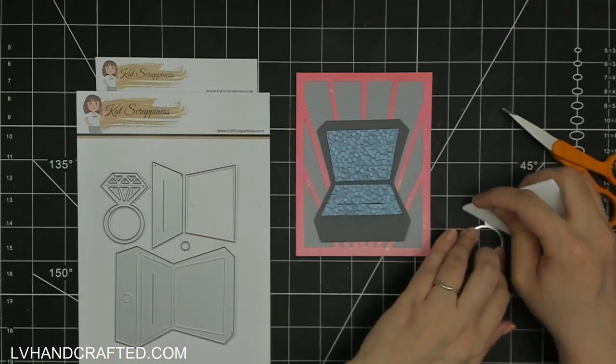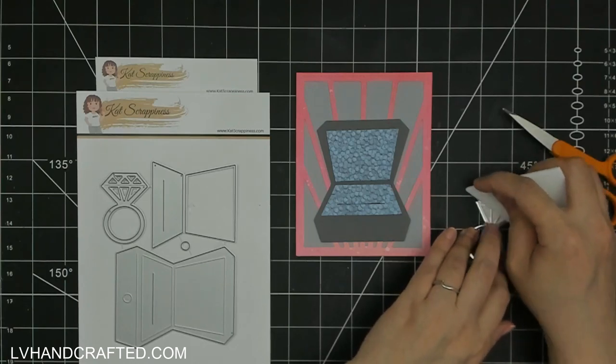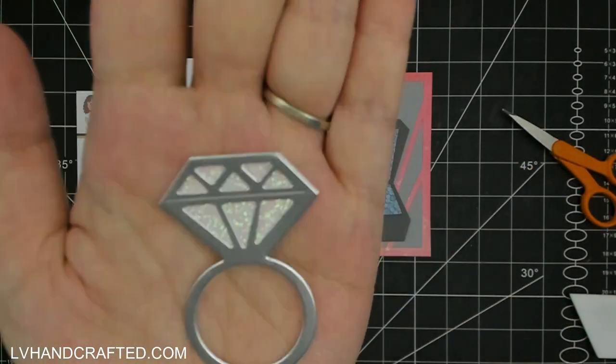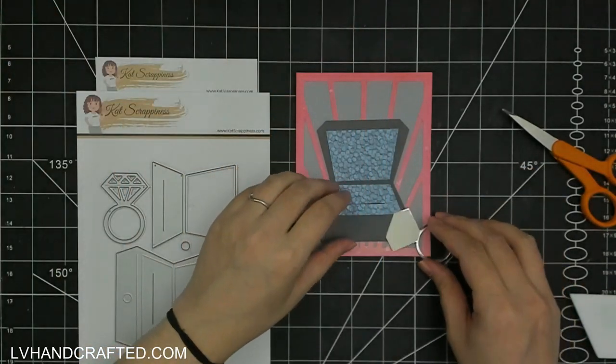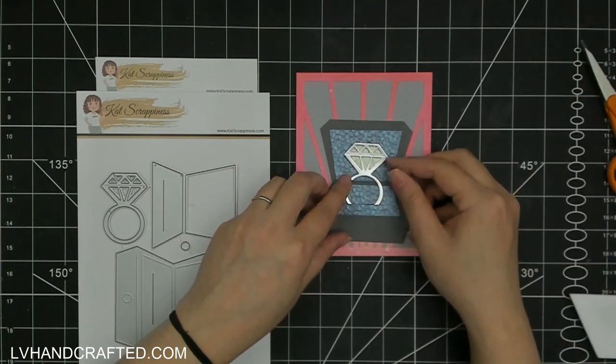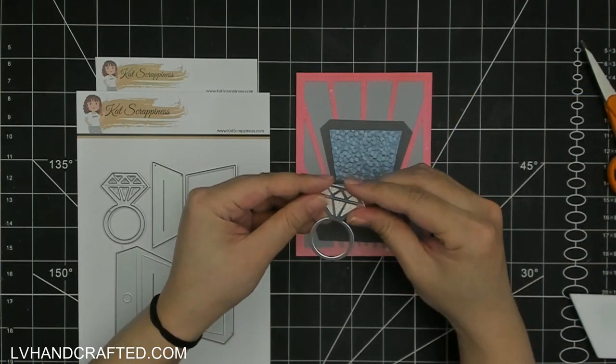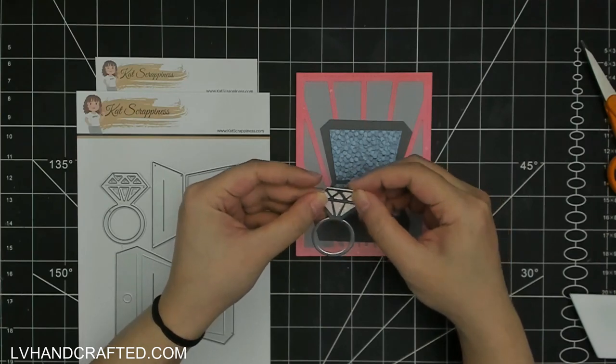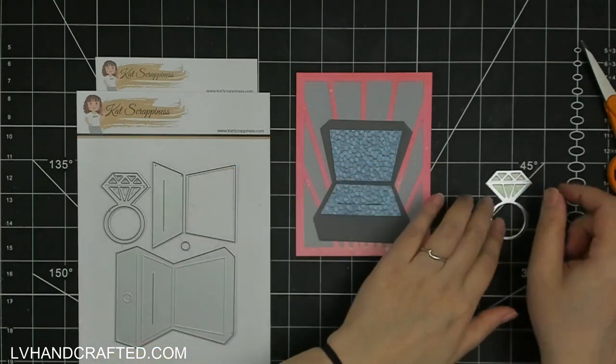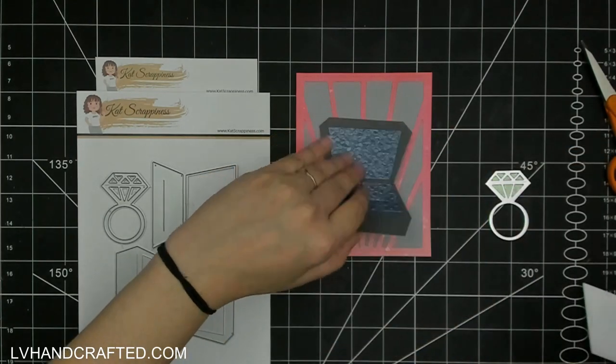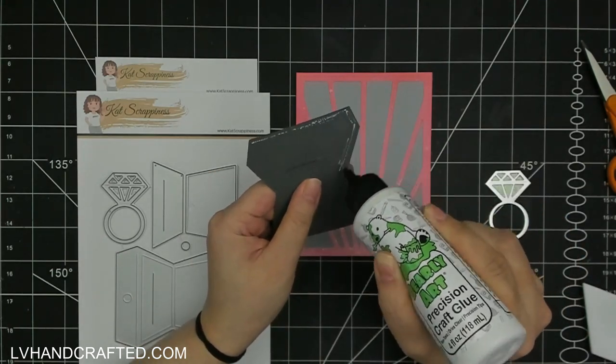As you're assembling this, you can glue the ring directly to the box, which would secure it really nicely. I just thought it would be fun to be able to take the ring out. So when I give this, I'll probably just leave the ring tucked into the box and just have it be an element that you can take out.